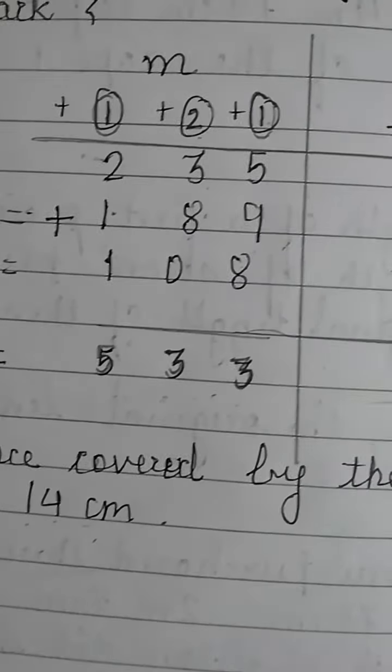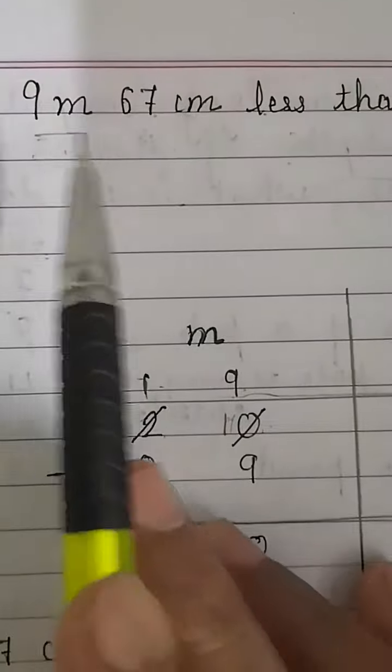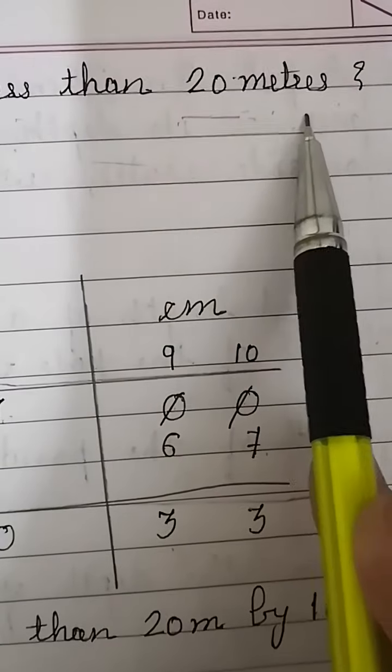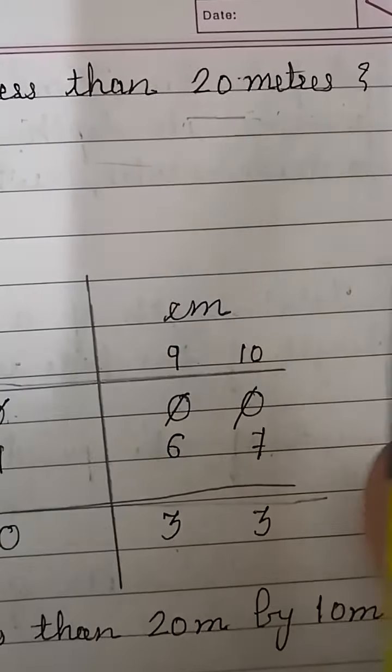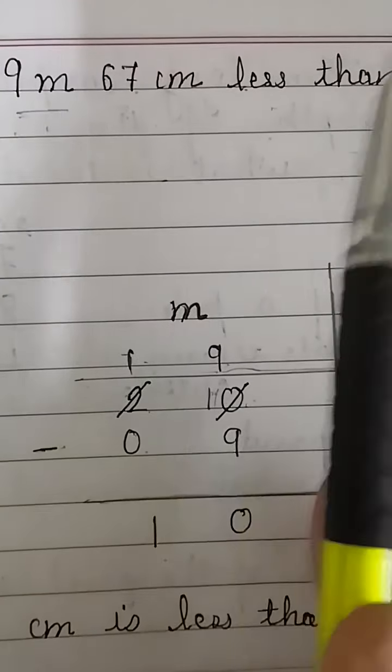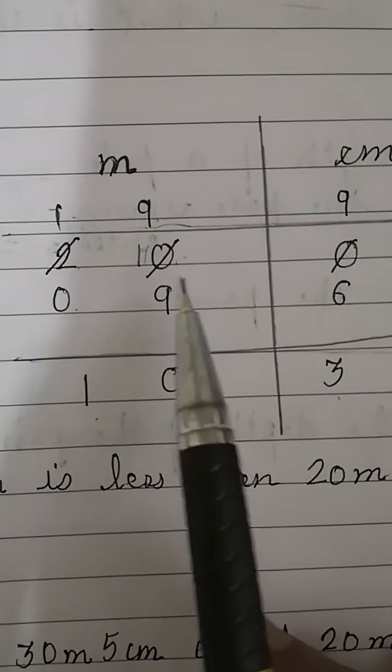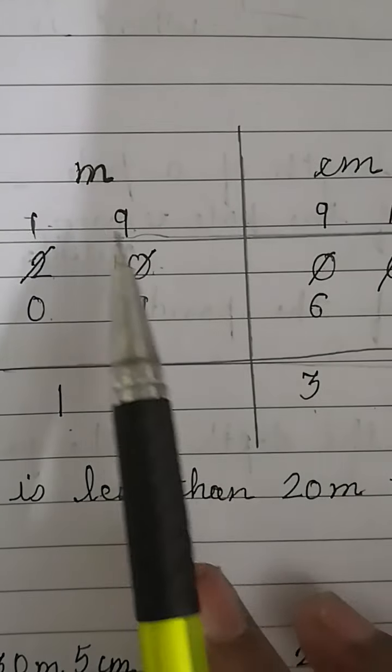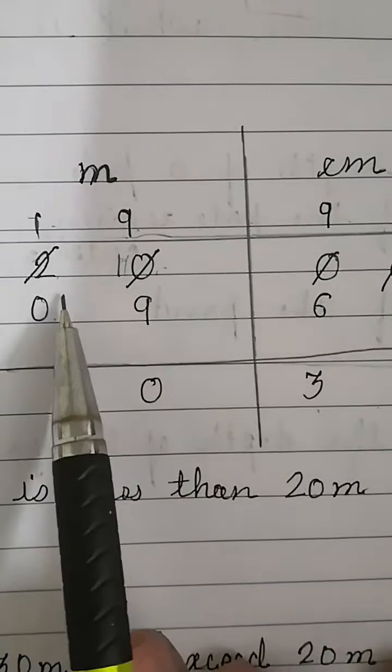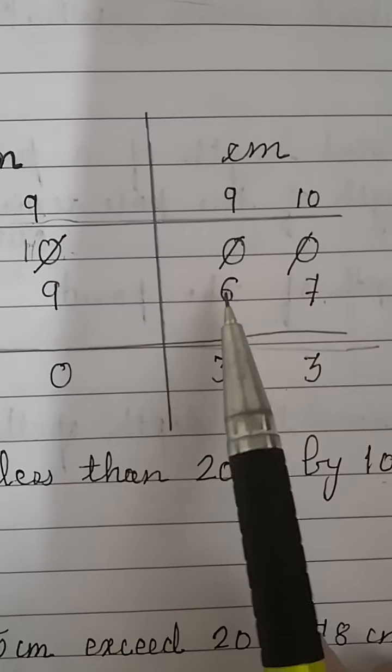Next problem: How much is 9 meter 67 centimeter less than 20 meters? Children, if you read the sum you will see we are asked how much 9 meter 67 centimeter is less than 20 meters. To find this we need to subtract 9 meter 67 centimeter from 20 meters, because 20 meters is the larger length. Let's arrange the lengths in proper columns: 20 meter 00 centimeter minus 9 meter 67 centimeter.